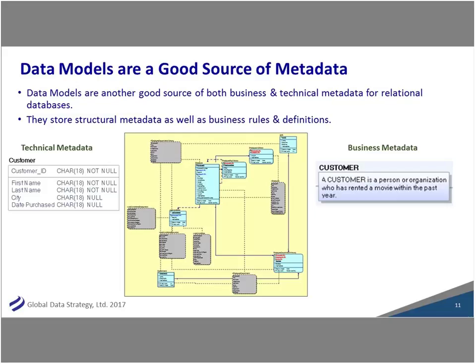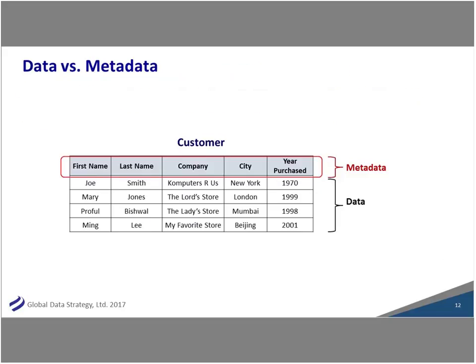Nothing wrong with the full metadata repository — in fact, many times you will need something more broad. But as a starting point, if the majority of what you're working with is relational and you're already doing modeling, leverage what you have. If this is a new concept, think of data versus metadata — if you think of a spreadsheet as a rough approximation of a database, it's sort of the rows of data. The fact that Joe Smith is in New York and purchased something in 1970 is the data.